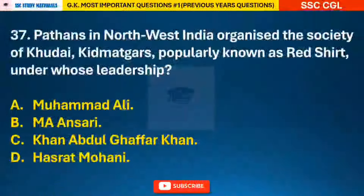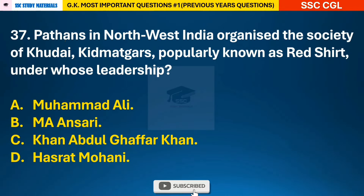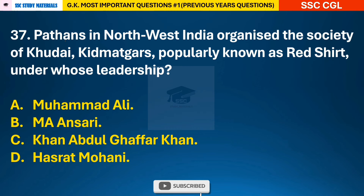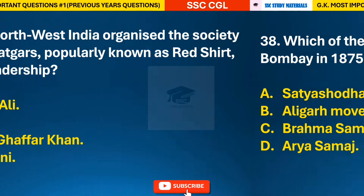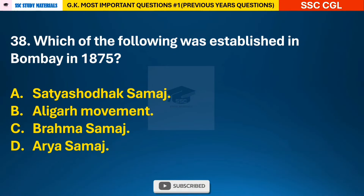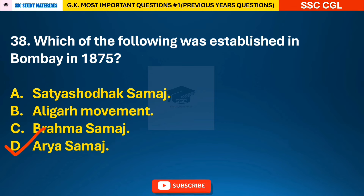Question 37: Pathans in Northwest India organized the Society of Khudai Khidmatgars, popularly known as Red Shirts — answer C: it was under the leadership of Khan Abdul Ghaffar Khan. Question 38: Which of the following was established in Bombay in 1875? — answer D: Arya Samaj was established in Bombay in 1875.